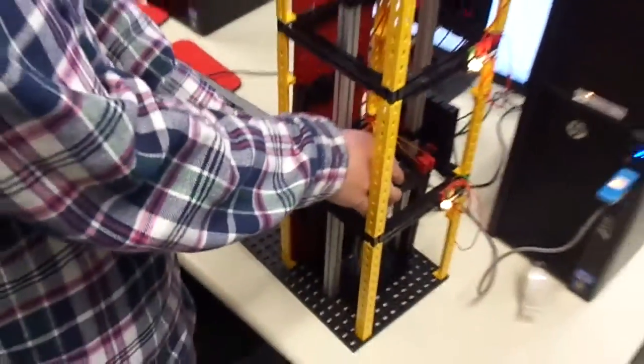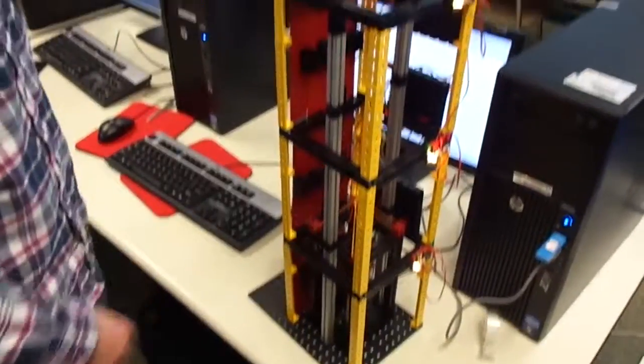Alright, so once we set the elevator back to its initial position, we can run the code. So it's currently running. Basically, it's just constantly checking for 20 seconds between if these three buttons are pushed.